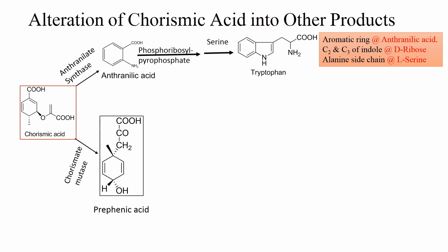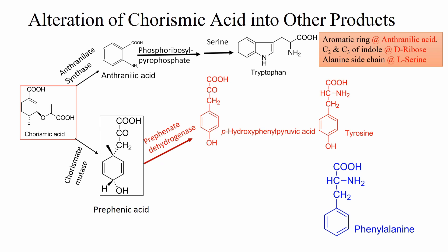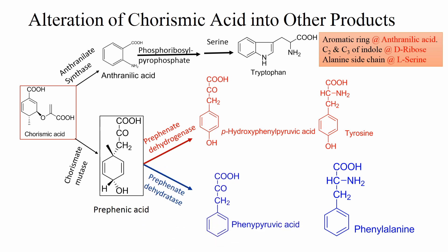Now coming to prephenate acid. The enzyme chorismate mutase converts chorismic acid into prephenate acid. Prephenate acid is the precursor for tyrosine and phenylalanine. For tyrosine, prephenate acid is first converted to 4-hydroxyphenylpyruvic acid in the presence of enzyme prephenate dehydrogenase. For phenylalanine, prephenate acid is converted to phenylpyruvic acid in the presence of enzyme prephenate dehydratase. Both these intermediate products then undergo amination to produce tyrosine and phenylalanine.